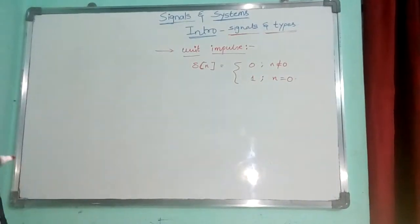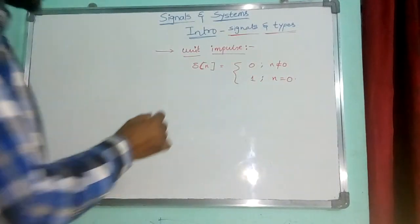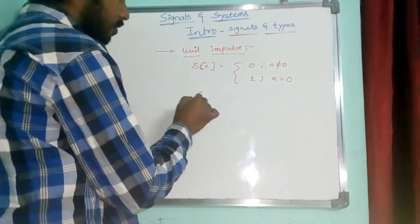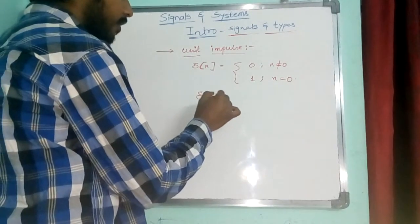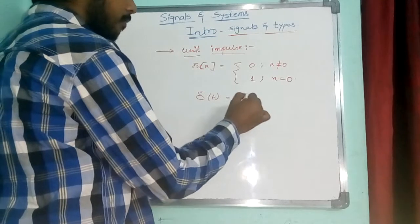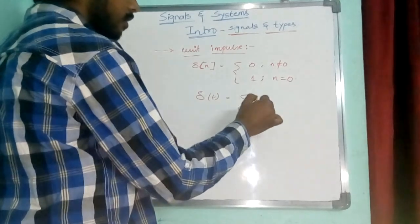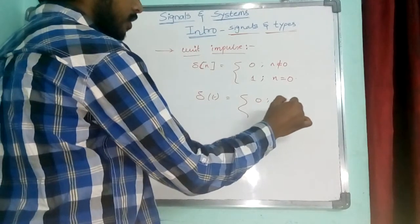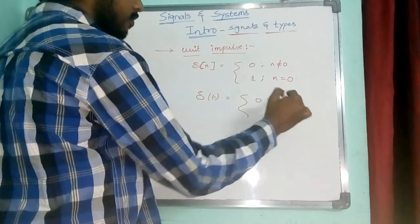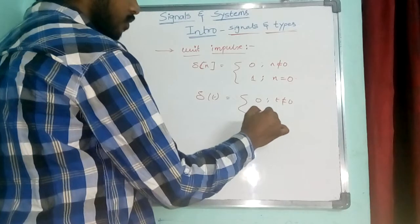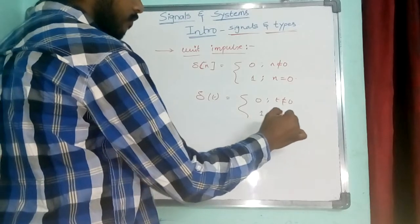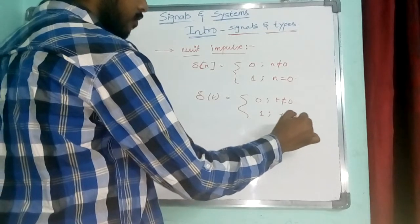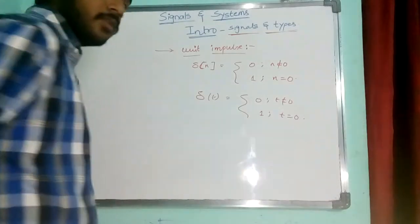Similarly, for continuous time, δ(t) = 0 for t ≠ 0, and δ(t) = 1 for t = 0.